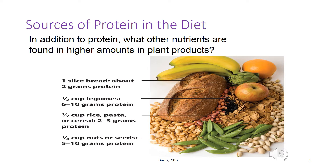Recommendations for a healthy diet suggest that our diets be based on whole grain products, vegetables, and fruits, and include smaller amounts of meats and dairy products.